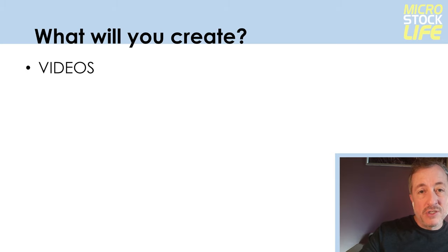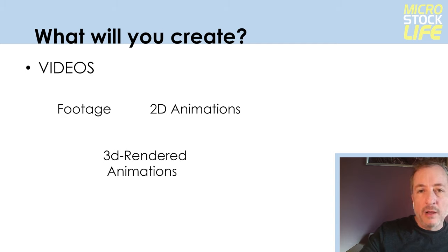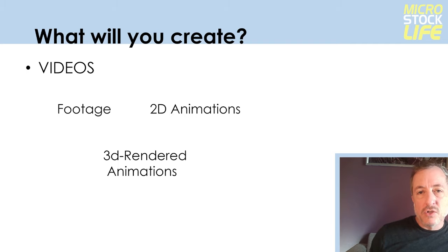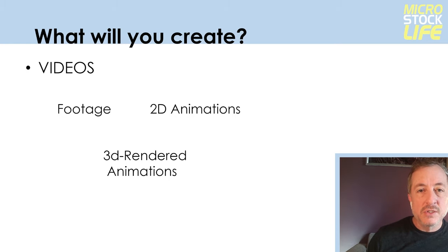In terms of video, there are different types you can submit: traditional footage — real-life videography; 2D animations, like hand-drawn artwork you can animate using Adobe programs and other software; and 3D rendered animations, where you can take something modeled for a still image and create video animations as well. I want to emphasize that you don't have to pick just one area to upload. You can try your hand at any and all of these and build a varied portfolio that meets different buyers' needs in different ways. Don't limit yourself.